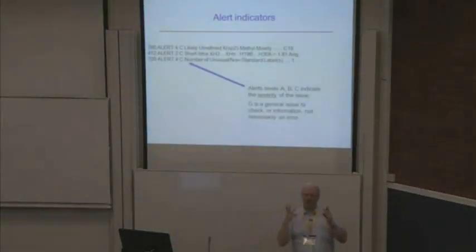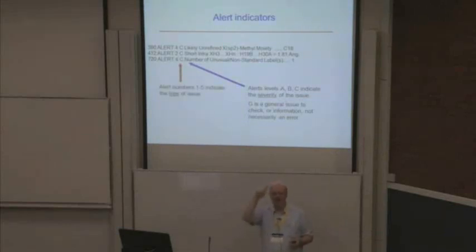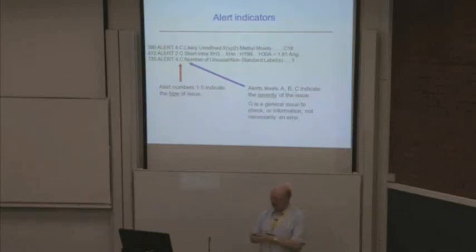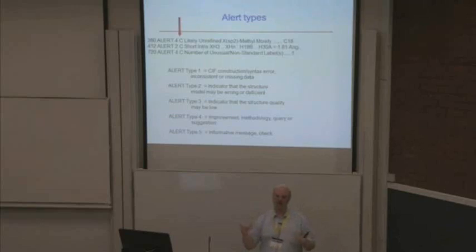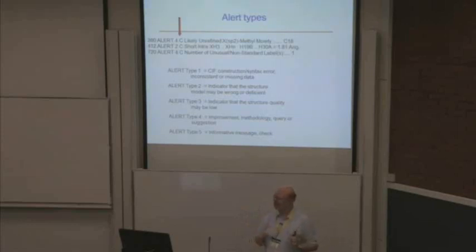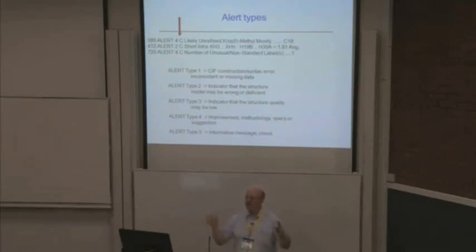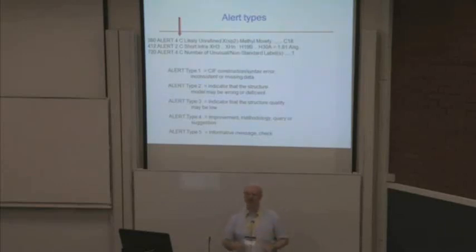You get feedback with alert indicators — there's A, B, C and G, which tells you about the severity of the alert. There's also an alert number which tries to tell you about the type of alert. Type 1 indicates a syntax error in the SIF — usually trivial and easy to correct. Type 2 says there's a hint that your model might not be quite correct. Type 3 says it's not really a problem with the model but the data overall are not of the greatest quality. The other types are really just information or suggestions for a more optimal result.